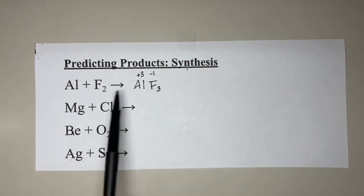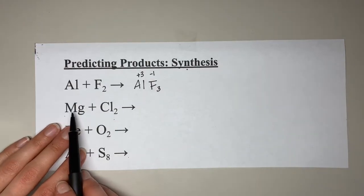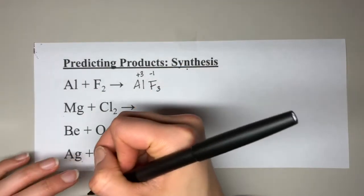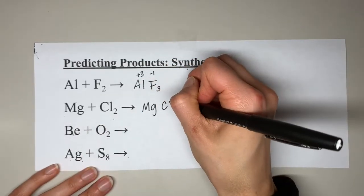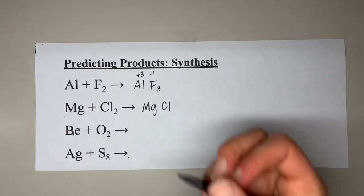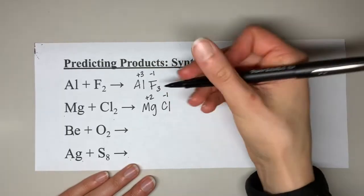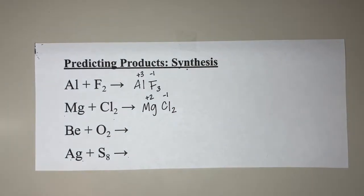Obviously we would need to balance this, but we aren't getting into balancing — this week we are just going to stick to predicting products. Let's try the second one: magnesium reacting with chlorine gas. Our product is going to be a compound that contains magnesium and chlorine. Magnesium has a +2 charge and chlorine has a −1. When we crisscross, we put the two down by the chlorine to give us MgCl2.